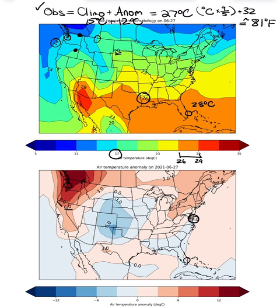Going back to our formula: observations equals Climo plus Anom. Our Climo is 28°C and our anomaly is 0°C, so the observed temperature in Miami is just 28 + 0 = 28 degrees Celsius. Taking 28, multiplying by nine-fifths, and adding 32 gives approximately 82 degrees Fahrenheit. So on this particular day, when Seattle was experiencing some of its warmest weather in recorded history at 81°F daily mean, Miami was experiencing a pretty average day at around the same temperature.